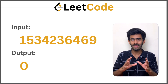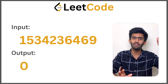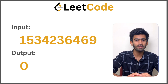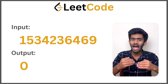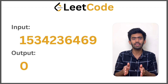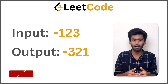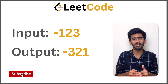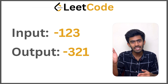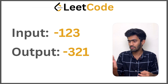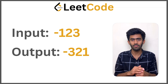Let us develop an algorithm to solve this question. First, we will store the sign bit of whether the number is negative or not. Then we will take the absolute value of the given input — if it were minus 123, we make it 123. Now, in this 123, we will take digit by digit and make the reverse of it.